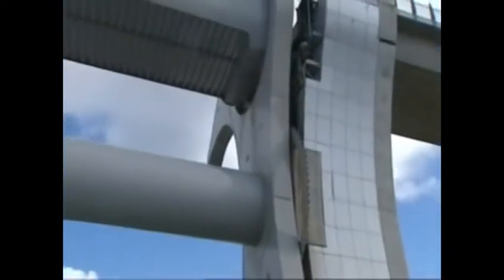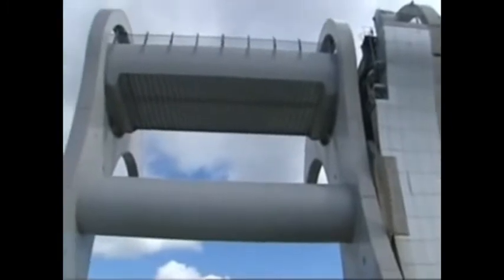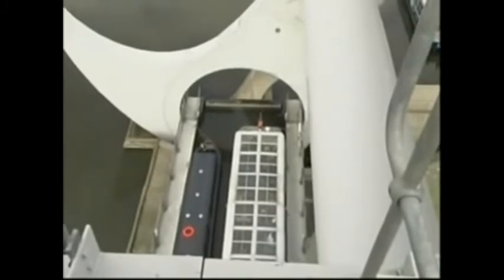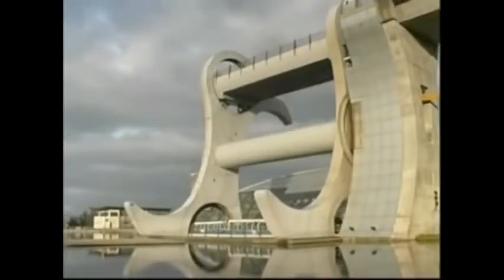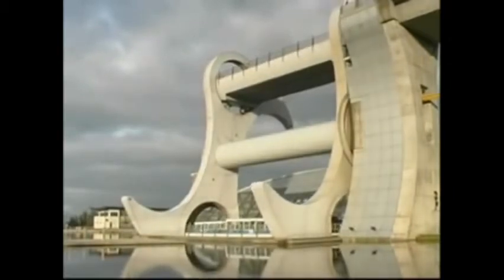The Falkirk wheel can turn in a clockwise or anti-clockwise direction, and the choice over which way it turns is made by an operator in the control room. To reduce wear on bearings and other moving parts, the operator will evenly distribute the number of times the wheel turns in each direction.